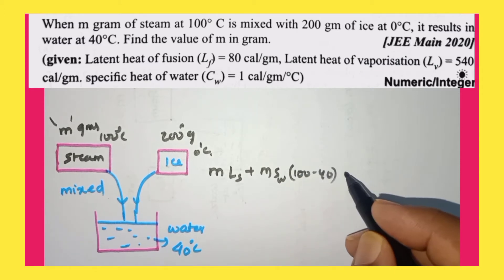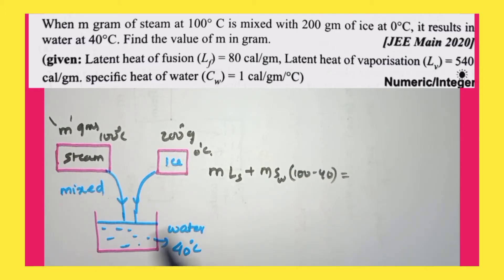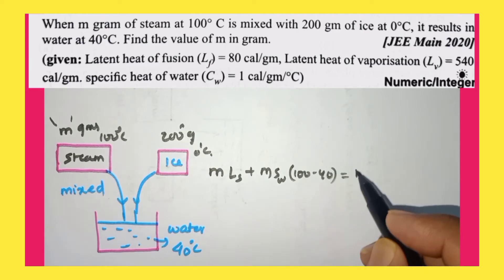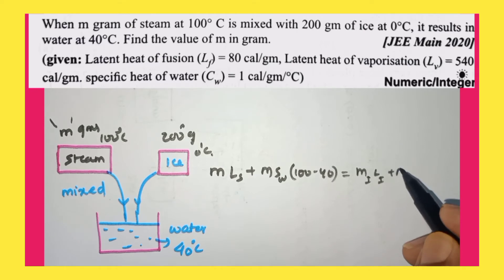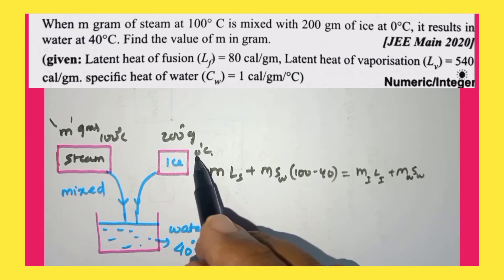Which can be taken as ice is converted into water. So first it should be converted into water. That means mass of ice times latent heat of ice, plus mass of ice which is converted into water, specific heat of water. Change in temperature is from 0 to 40, so 40 minus 0 like this.